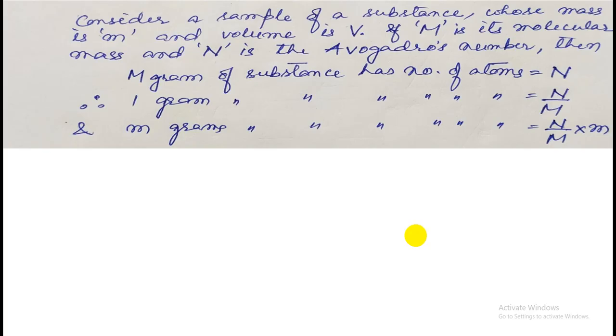Let us see how it can be done. We are considering a sample of a substance having mass m and volume V. Capital M is considered as the atomic or molecular mass of the substance.